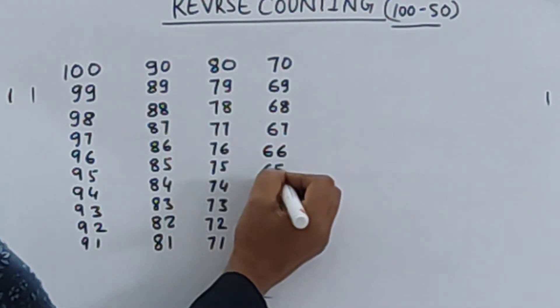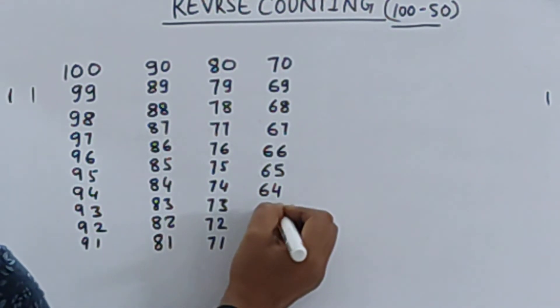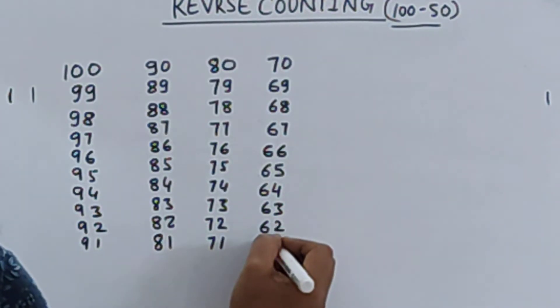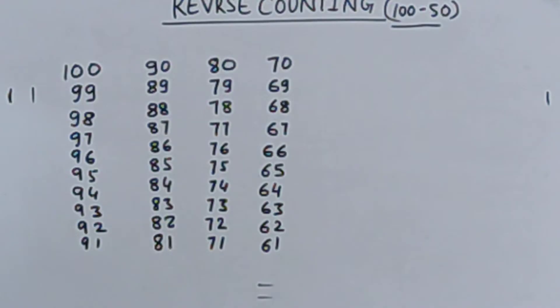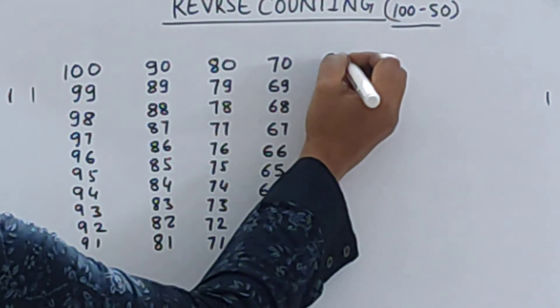Now here, 70, 69, 68, 67, 66, 65, 64, 63, 62, and 61. Here 60.